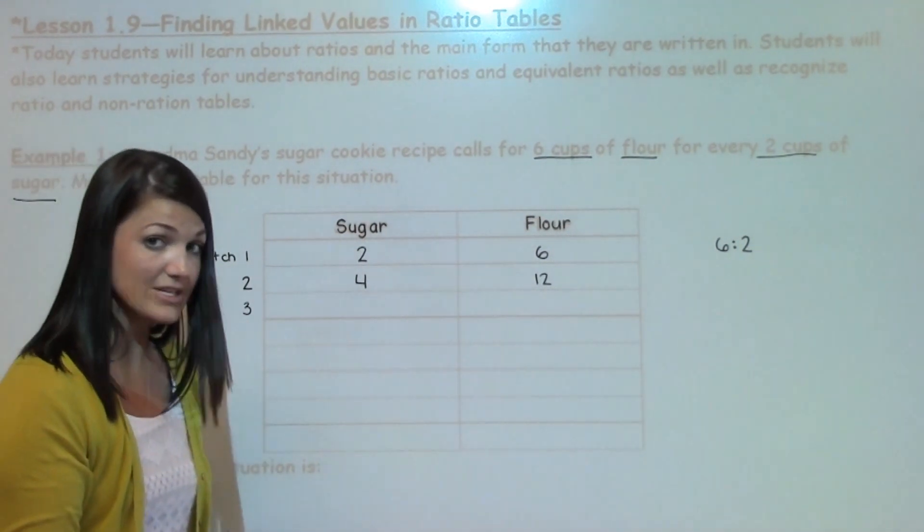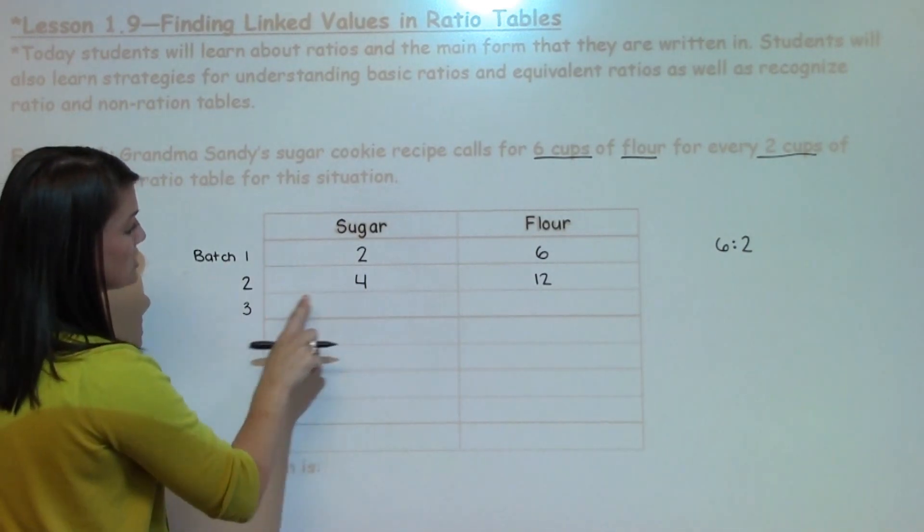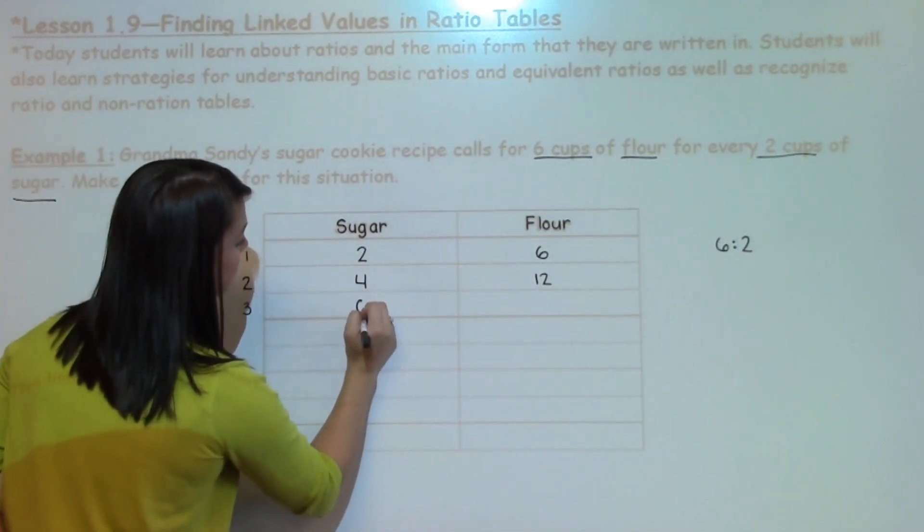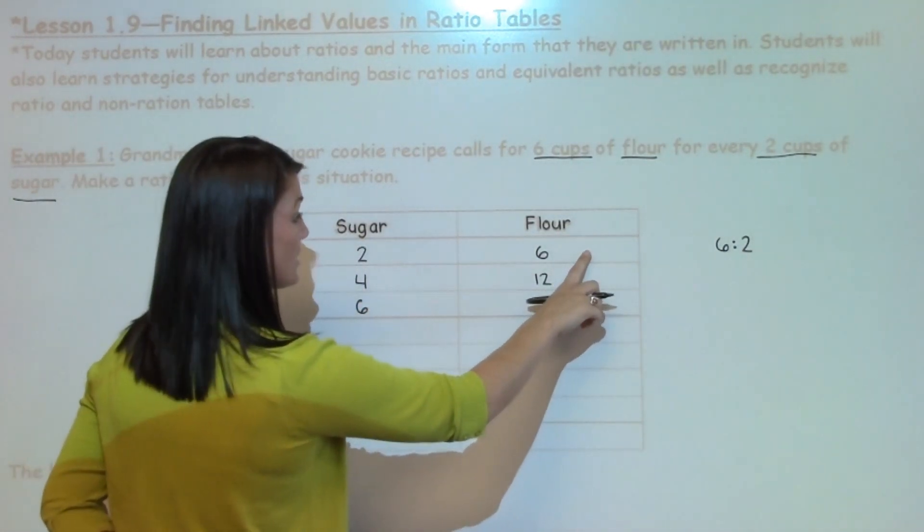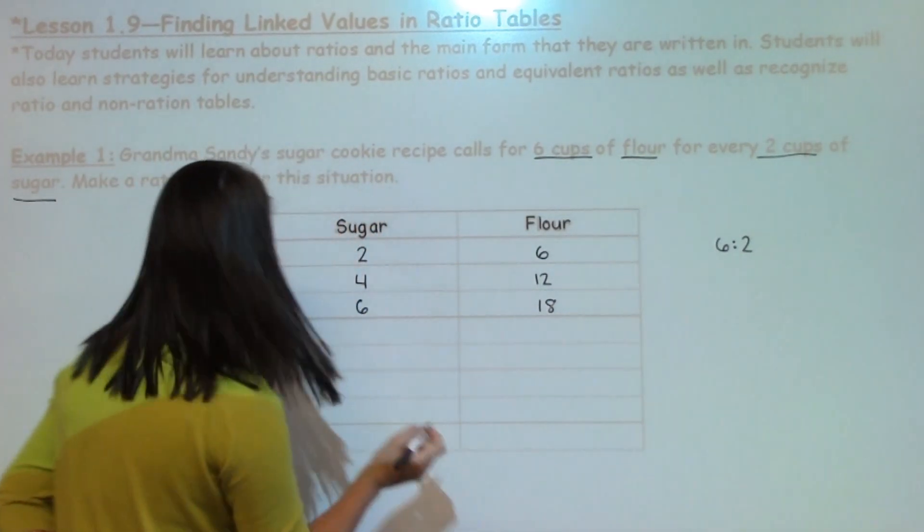If I wanted to make 3 batches of Grandma's sugar cookies, I would need 2 times 3, which gives me 6. And I would need 6 times 3, which gives me 18. That's a lot of flour.